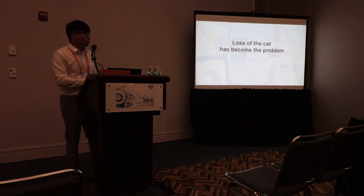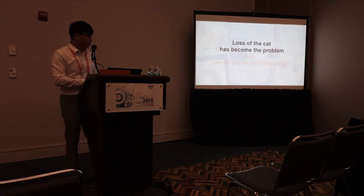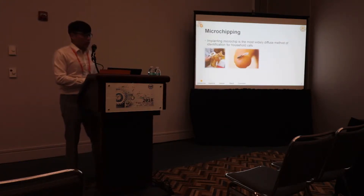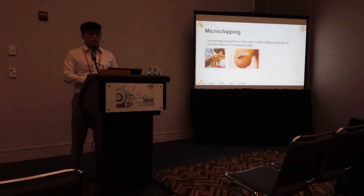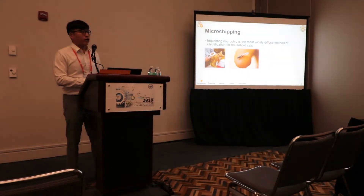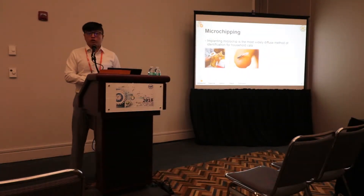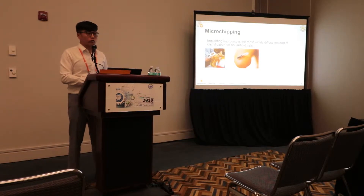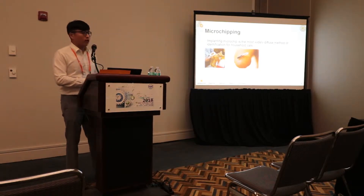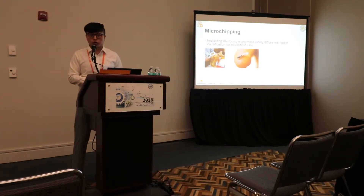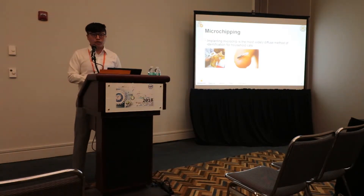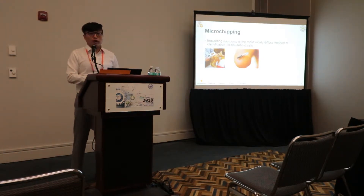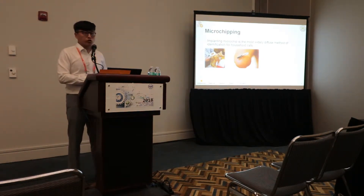But how can we get our missing cat back? Conventionally, implanting microchips is the most common method to identify cats. The animal shelter identifies the cat and contacts the owners using the information in the microchips. It is reliable, but it is invasive and requires additional cost.